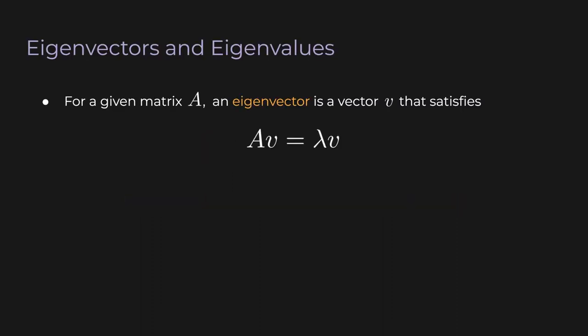The definition of an eigenvector is extremely simple. Given a matrix A, a vector v is called an eigenvector of that matrix if it satisfies this equation: Av equals lambda v, where lambda is just a scalar. We multiply v by this matrix and we just get back a scalar multiple of the same vector.